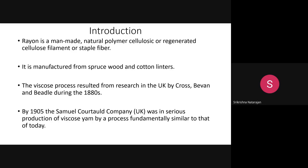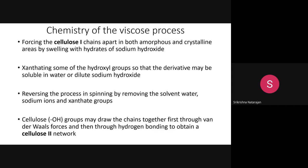Viscose rayon is a regenerated cellulosic fiber manufactured from the natural polymer cellulose, sourced from wood such as spruce wood. Chemically, viscose rayon is also cellulose. The difference lies in the reaction chemistry: the wood pulp cellulose is treated with alkali, which changes the molecular structure slightly.